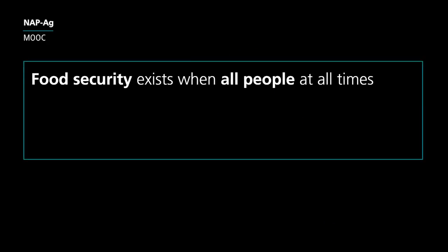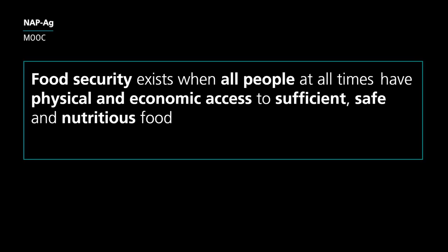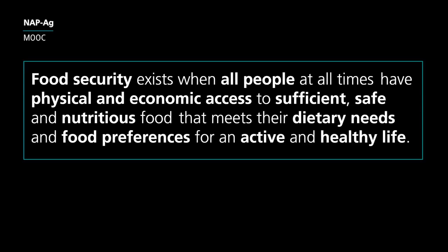Let's get more specific about food security. Where did this concept come from, and why is it important? The definition of food security was coined at the World Food Summit in 1996. It states that food security exists when all people at all times have physical and economic access to sufficient, safe, nutritious food that meets their dietary needs and food preferences for an active and healthy life. This leads to four dimensions of food security.